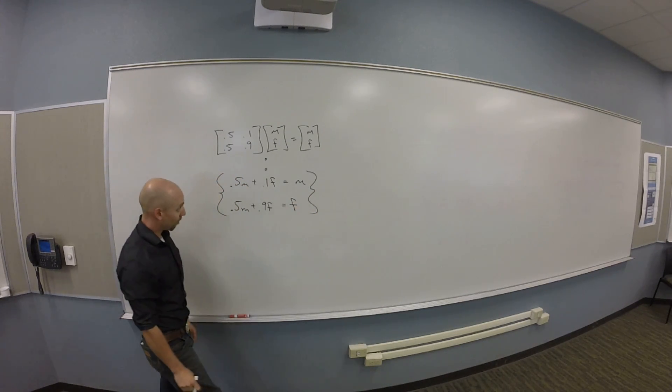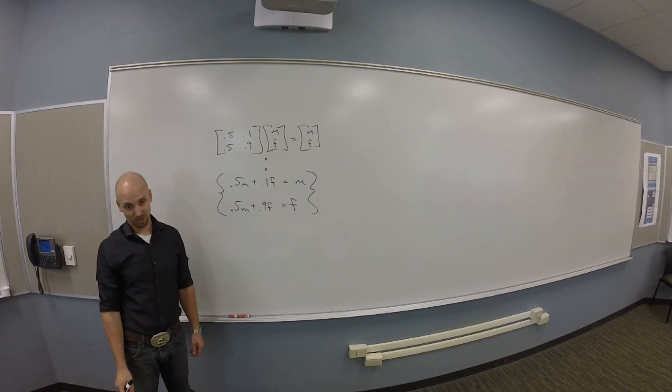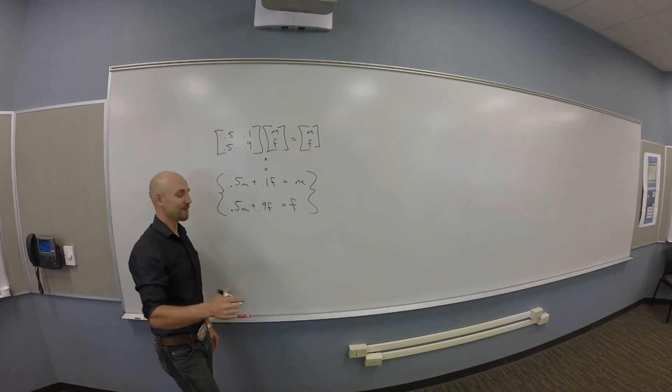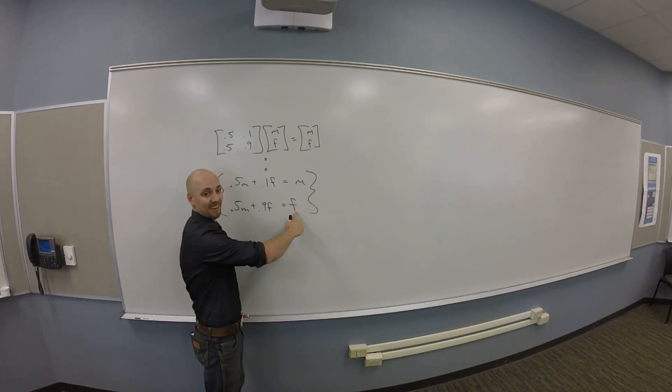Okay. Now, right now I can't put this in an augmented matrix. You guys see why? To put it in an augmented matrix, I need numbers over here. Right now I have variables over here. So let me subtract m from both sides of this equation, subtract f from both sides of this.